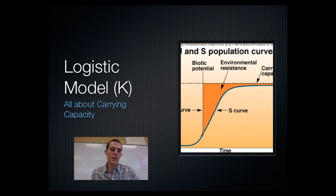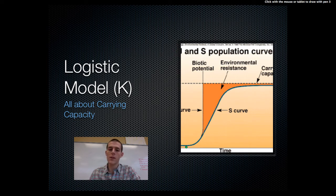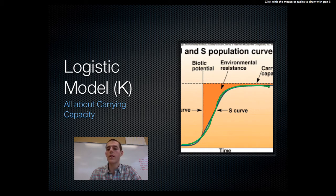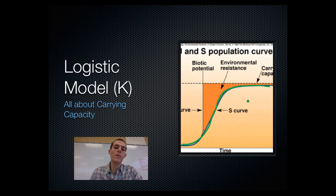In the logistic model, what we see happening is a population that takes off and starts to go through an exponential growth phase. Then as it gets close to the carrying capacity of the environment, the growth of the population levels out. Organisms start having fewer kids and more of them are dying off.